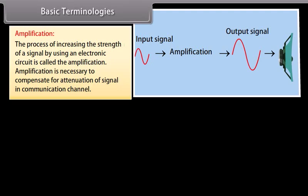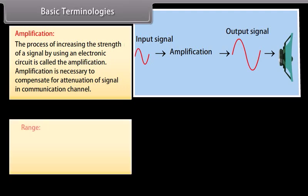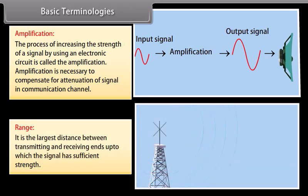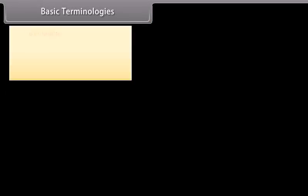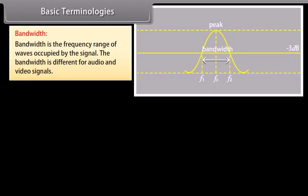Amplification is necessary to compensate for attenuation of a signal in a communication channel. Range: it is the largest distance between transmitting and receiving ends up to which the signal has sufficient strength. Bandwidth: bandwidth is the frequency range of waves occupied by the signal. The bandwidth is different for audio and video signals.